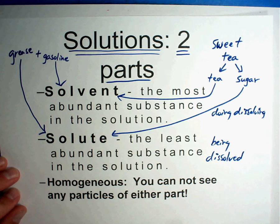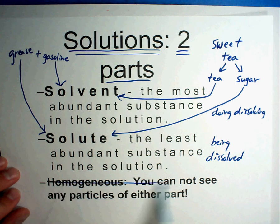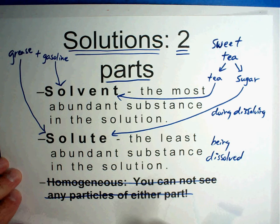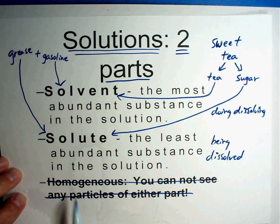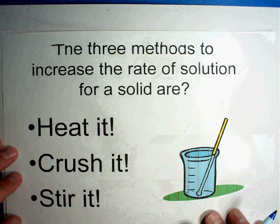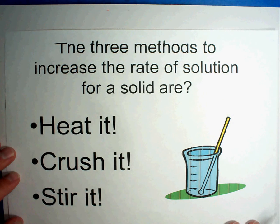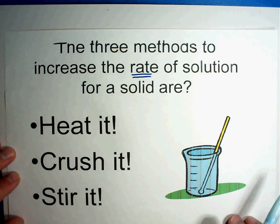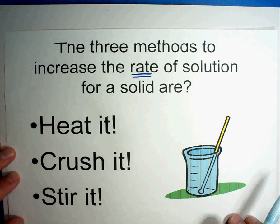Now they give you a definition here for homogeneous. I'm just going to go ahead and just put a line through that. They don't ask that word very often, so I'll just make your life easier and we'll just take that word out. Now whenever you have a solution, that means you're mixing things together, you can make things mix up faster. There are three methods to increase the rate of solution. So I'll give you a second to jot these down.